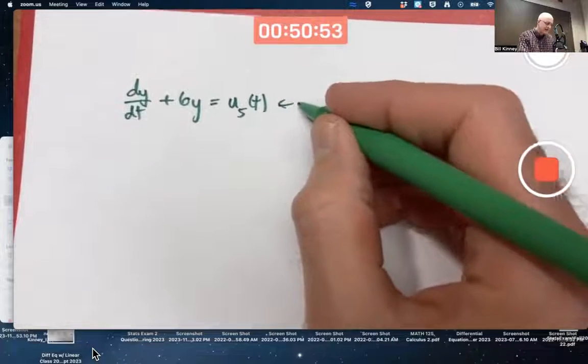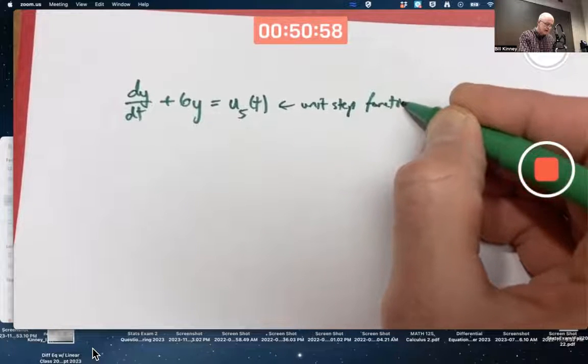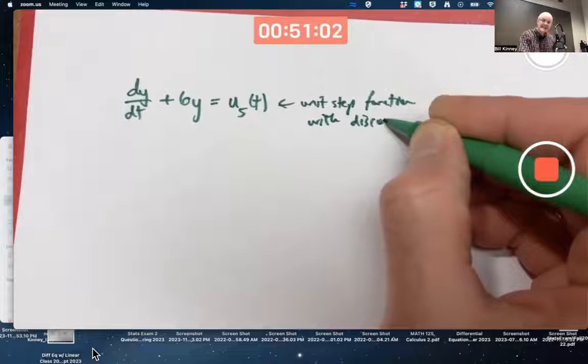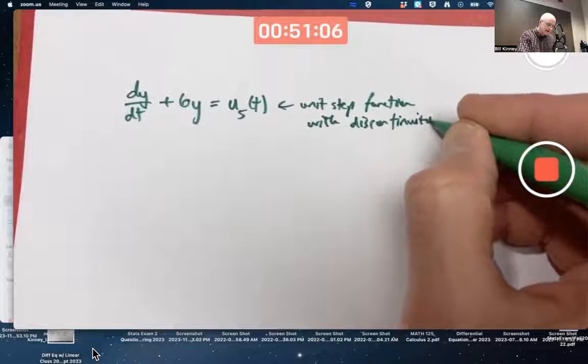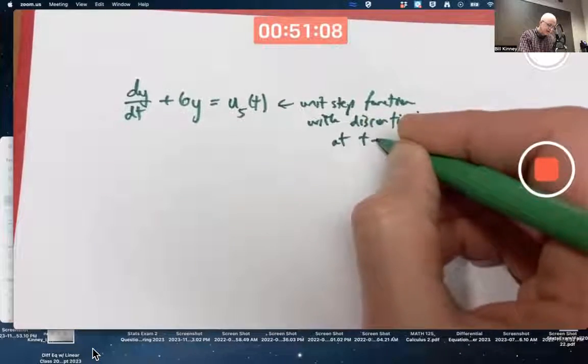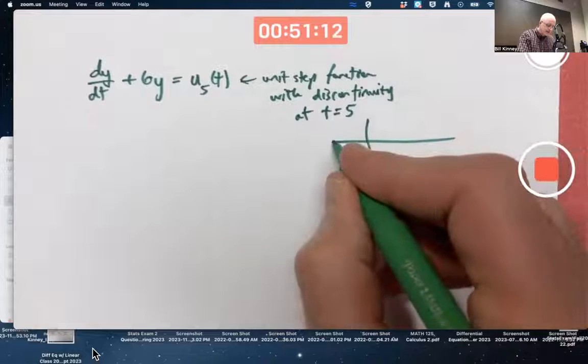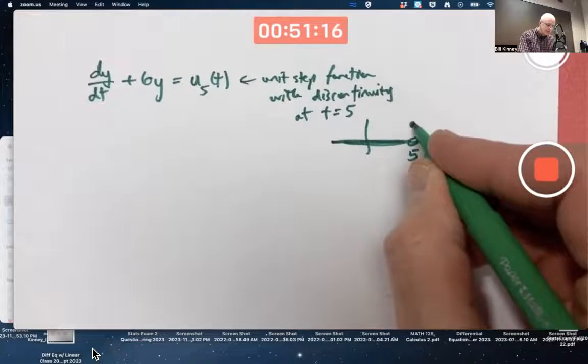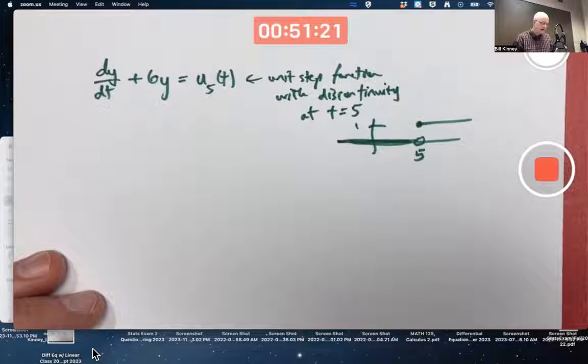It's called the unit step function with discontinuity. It's a discontinuous function with discontinuity at t equals 5. What does its graph look like? It's 0 until you get to 5, where it jumps up to 1. Unit step function. It's like a step going up by one unit.